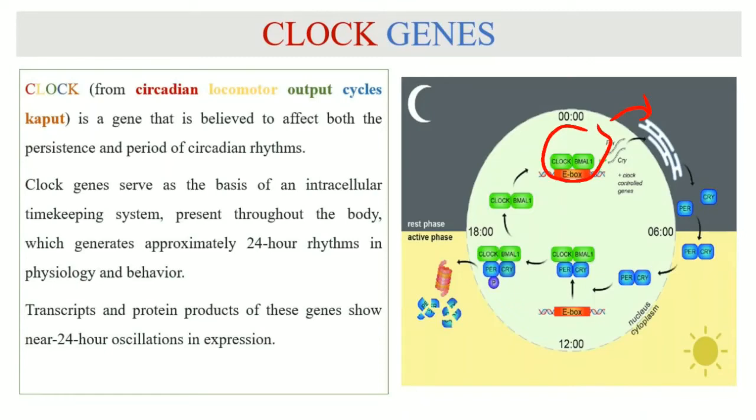The process of translation results in the formation of PER and CRY proteins. These proteins start accumulating in the cytoplasm and after buildup during the night, these proteins form a complex known as PER and CRY complex and this complex then enters back into the nucleus.